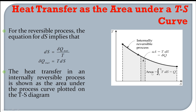On a temperature-entropy (T-S) diagram, the area under the curve of a particular process gives you the heat transfer, because it equals T·ΔS. The integral from 1 to 2 of T·dS equals Q. So heat transfer in an internally reversible process is shown as the area under the process curve plotted on a T-S diagram — directly giving you the heat transfer during that process.